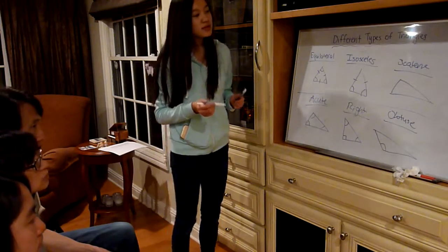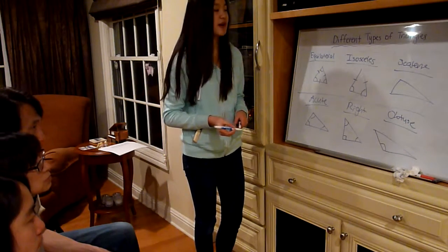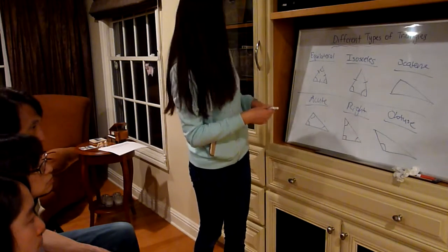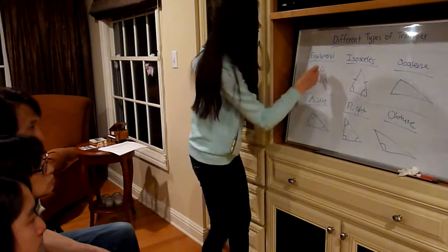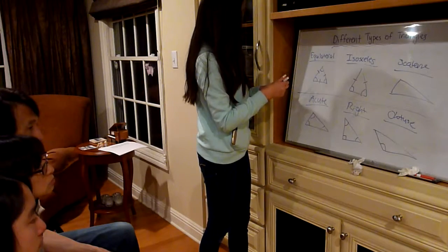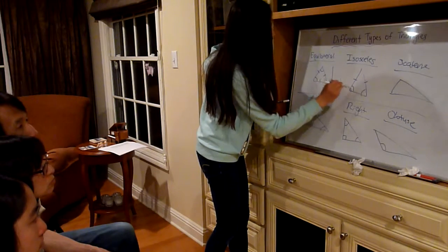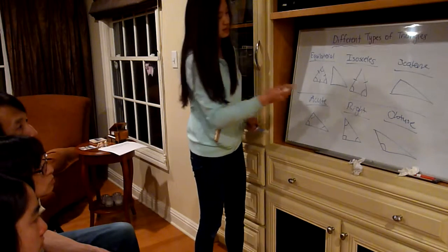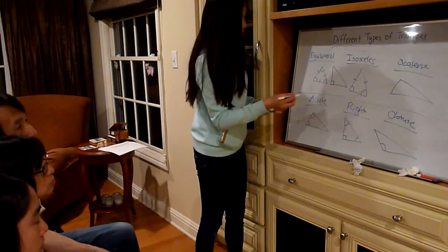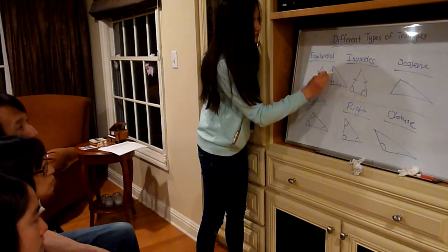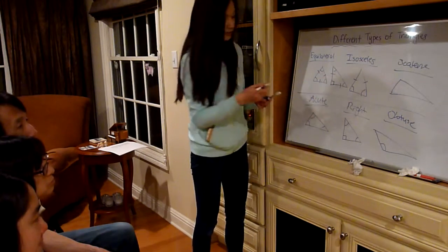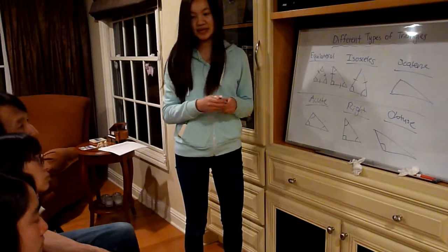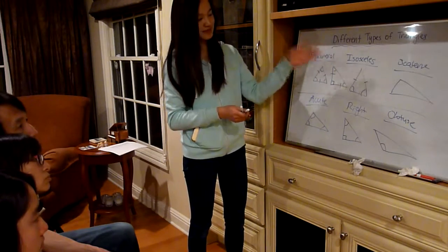You can also combine the types of triangles and give one both names. For example, if I have a triangle with a right angle, but it also has two equal sides and two equal angles, I would call this an isosceles right triangle because it follows both classifications.